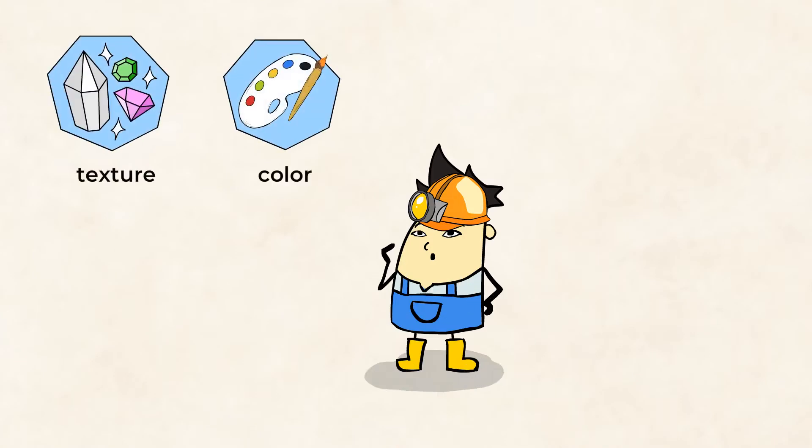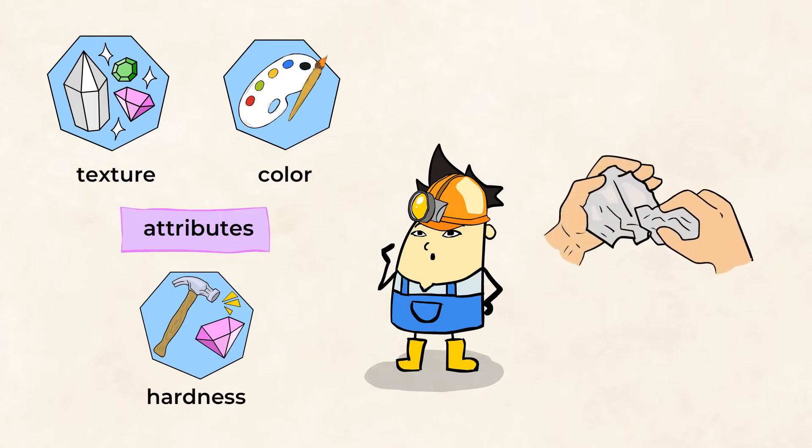Color and texture are two of the main attributes that geologists use to describe rocks. The third way geologists describe rocks is hardness. Scientists check for hardness by scratching one mineral on another surface, like another rock or even glass. If the rock leaves a scratch, that means it's harder than the other surface.